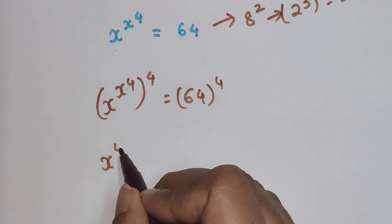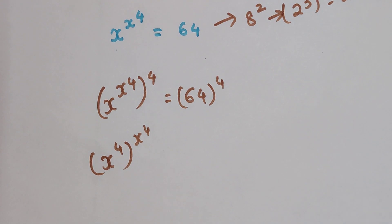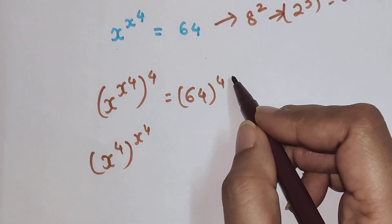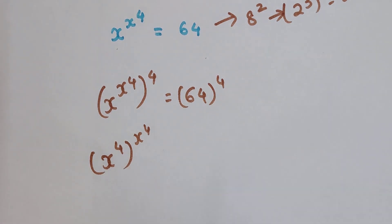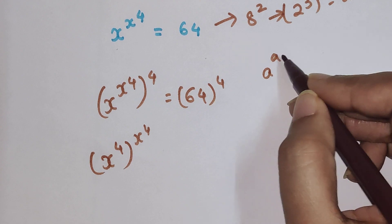And this can be written as (x^4)^(x^4). So now what you have to do is arrange 64^4 in such a way that it is raised to some number, like a^a - the number raised to itself.